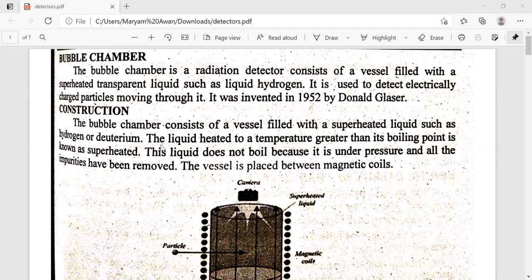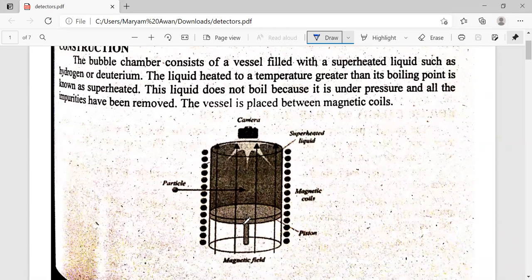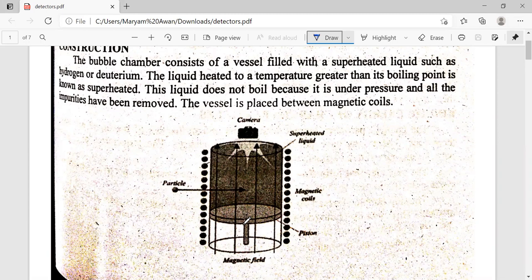What does this mean in the construction? The bubble chamber consists of a cylindrical vessel which contains superheated liquid such as hydrogen or deuterium. It is heated up to a temperature which is greater than its boiling point, and we call it superheated. The liquid is not boiling because it is under pressure and all the impurities have been removed.